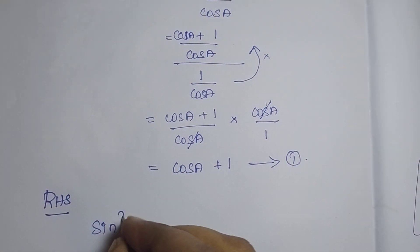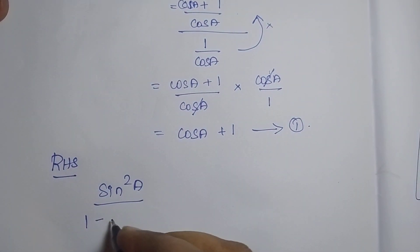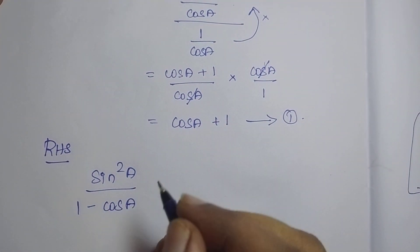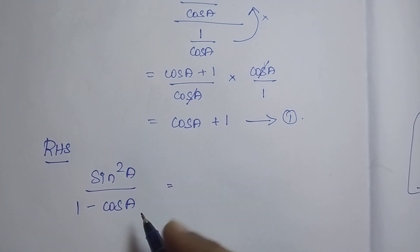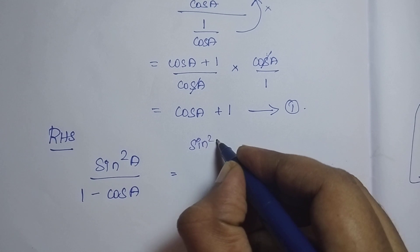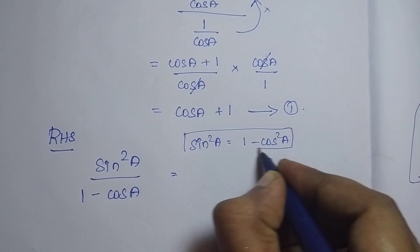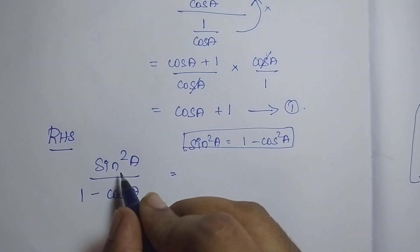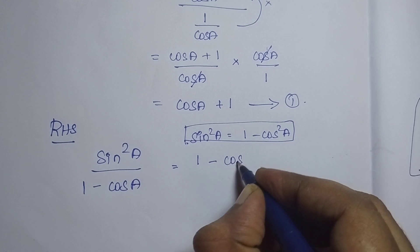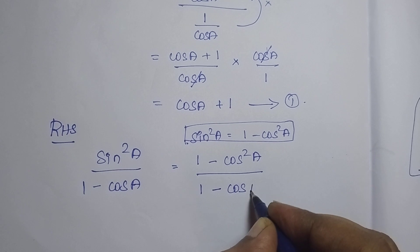Therefore, sin square A divided by 1 minus cos A — this is what the right hand side says, which is given in the question. We know the formula: sin square A is equal to 1 minus cos square A. So I am going to apply this in the place of sin square A. Therefore, 1 minus cos square A divided by 1 minus cos A.